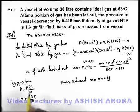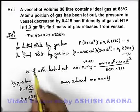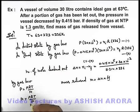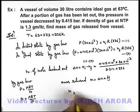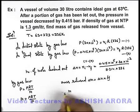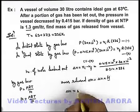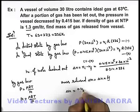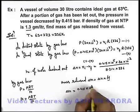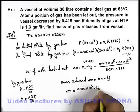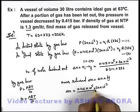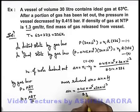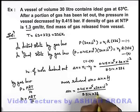Gas density at NTP is given as 1.3 gram per liter. R, T, and P can be directly substituted here. So this mass which is released we can write as delta m, which can be given as 0.415 into 10 to power 5, multiplied by 30 into 10 to power minus 3, divided by 8.314 into 336.